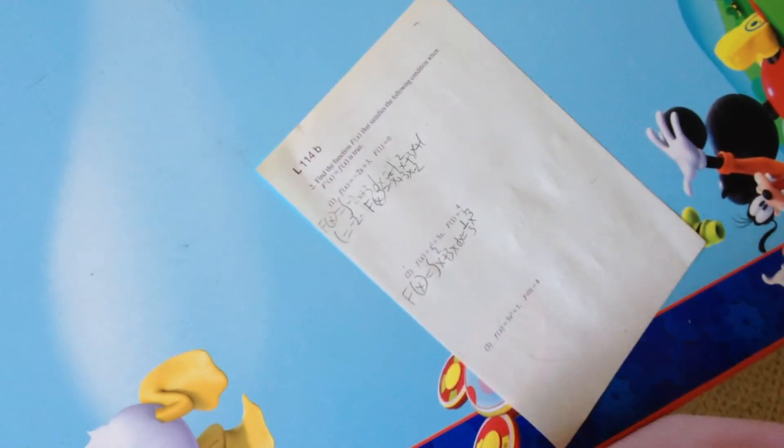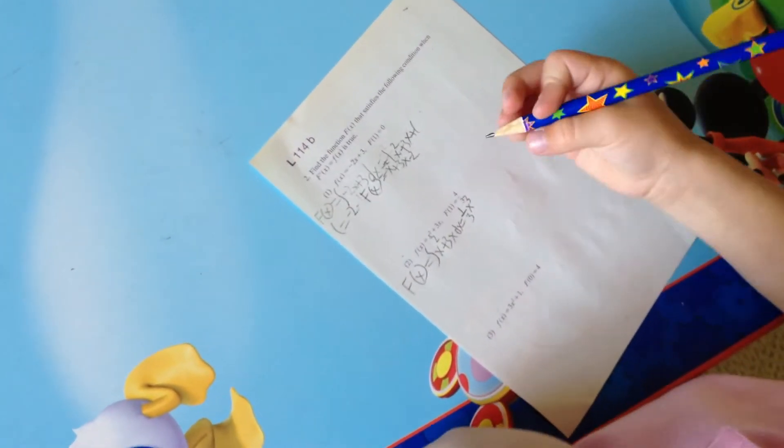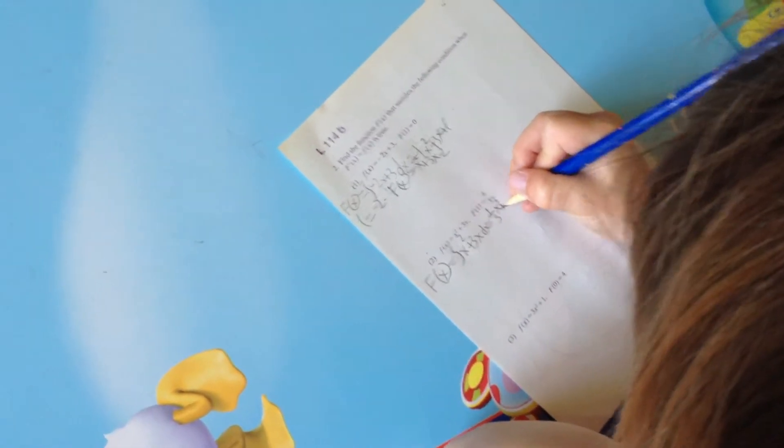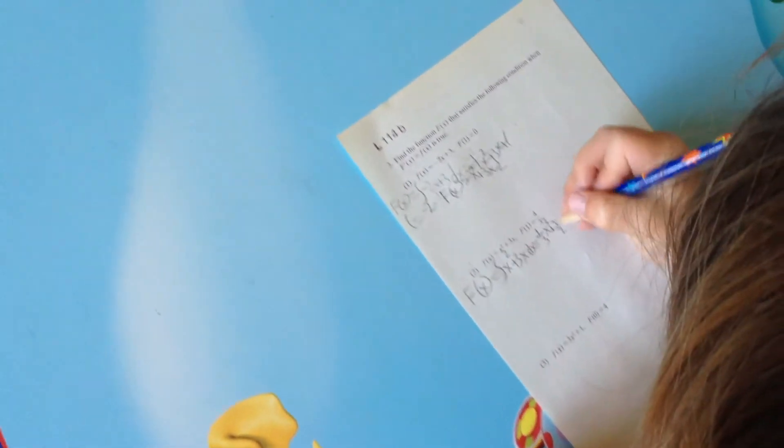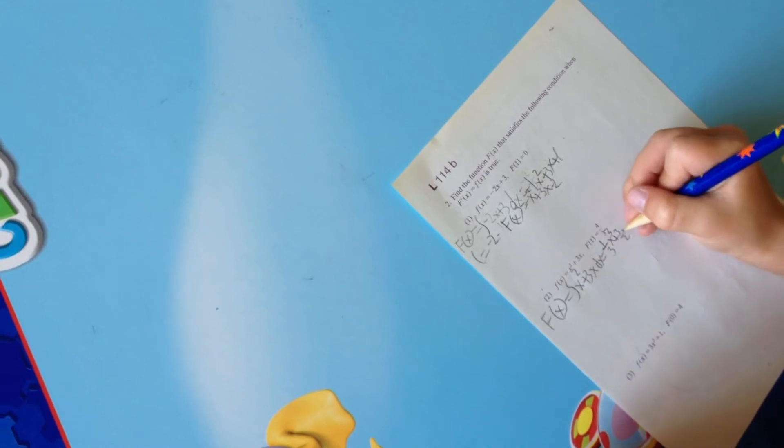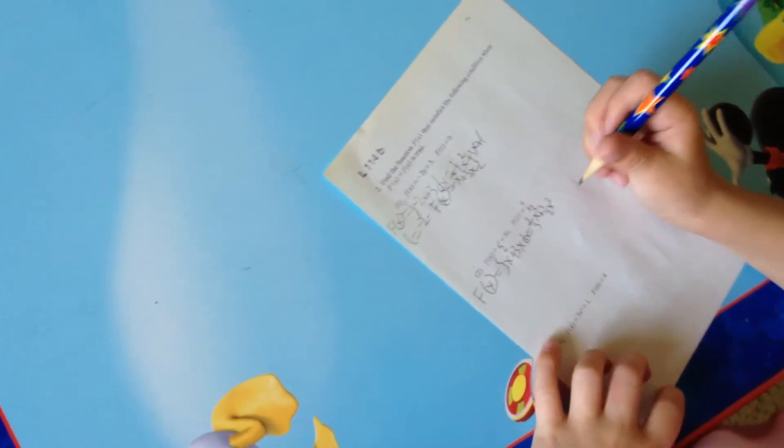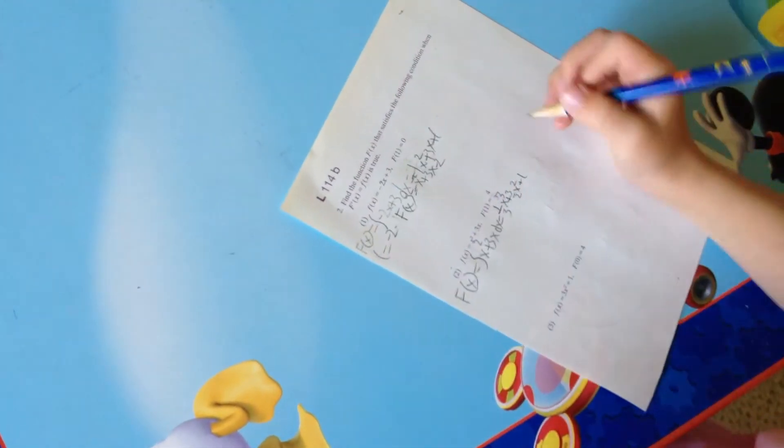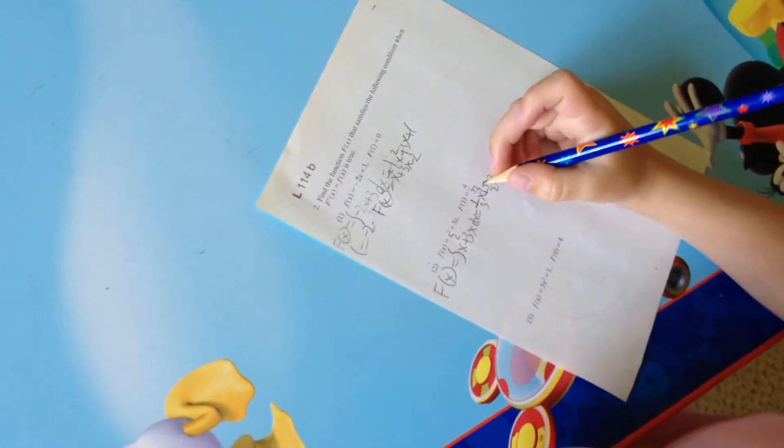So the integral of 3x is 3 over 2. So plus 3 over 2 x... No. 3 over 2 x squared. And then now we... Plus c but we don't know what c is. So we have to figure it out. So well we know that f of 1 equals 4 over 3. So let's plug in f of 1.